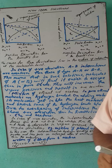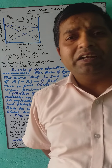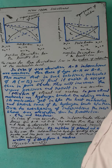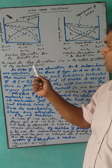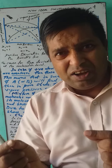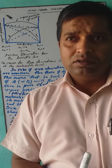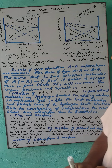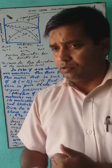What is the cause of positive and negative deviation in non-ideal solutions? It depends on the nature of interaction at the molecular level — that is, the nature of molecular interactions.